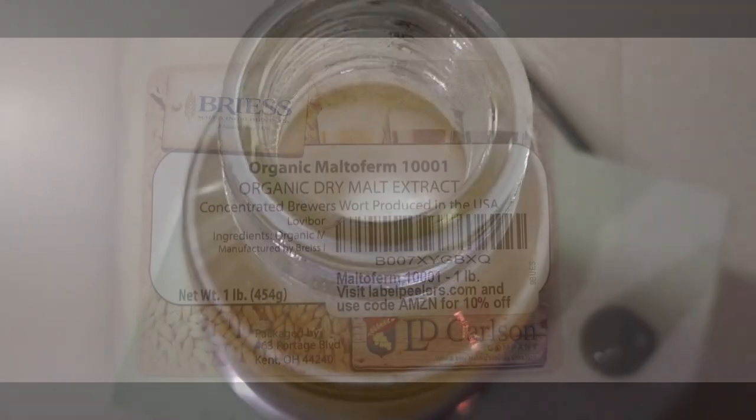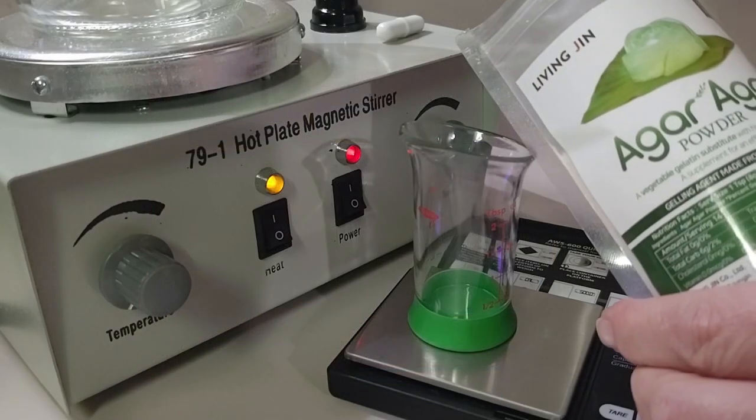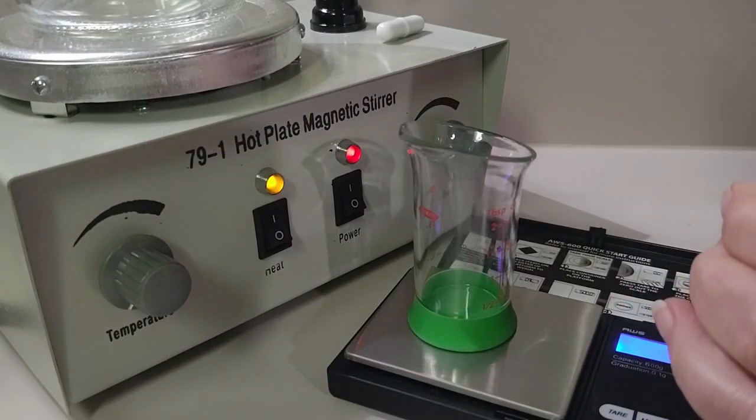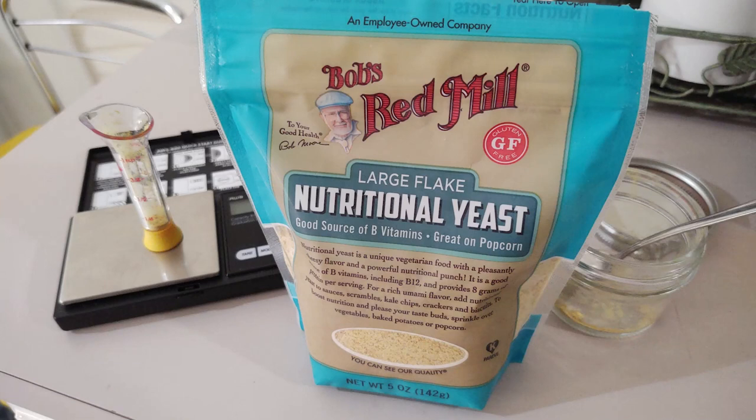In one of our previous videos, we discussed how to make an MEA, or malt extract agar. We found that the results were amazing after we made our transfers, but we weren't getting that amazing rhizomorphic growth we wanted. Through much research and many transfers, we found the perfect recipe to get that beautiful rhizomorphic growth we wanted.